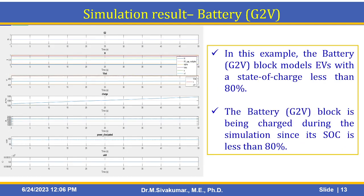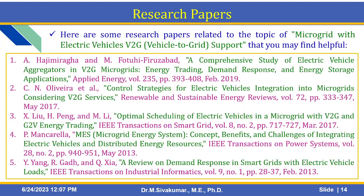Let us see the G2V block. This is the G2V block output, also obtained from SimScape Result Explorer. In this example, the battery G2V block models EVs with a state of charge less than 80%. The battery block is being charged during the simulation since its state of charge is less than 80%.